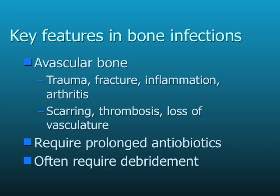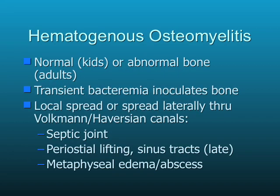The key features to be aware of in bone infections is that they occur in areas of avascular bone — certainly any area where you've had preceding trauma, any fracture with scar or inflammation, arthritis, or devascularized bone. Bone doesn't have a whole lot of good vascular supply to begin with. Areas of thrombosis or ischemia are also important. Usually, you require prolonged antibiotics to get bone infections under control, and they usually require debridement of the dead bone in avascular areas.